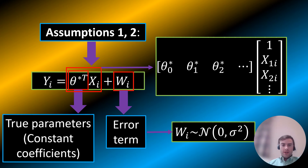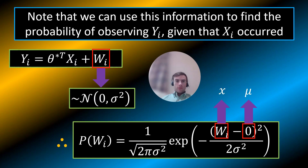For the thetas, you have theta_0, theta_1, theta_2, and so on. For the x's, you start with 1, because you have theta_0 plus theta_1 x_1 plus theta_2 x_2, all the way to the last term. Also, i is the index of the ith data point — so if you have n data points, you index them by i. For example, when i equals 5, that's the fifth data point.